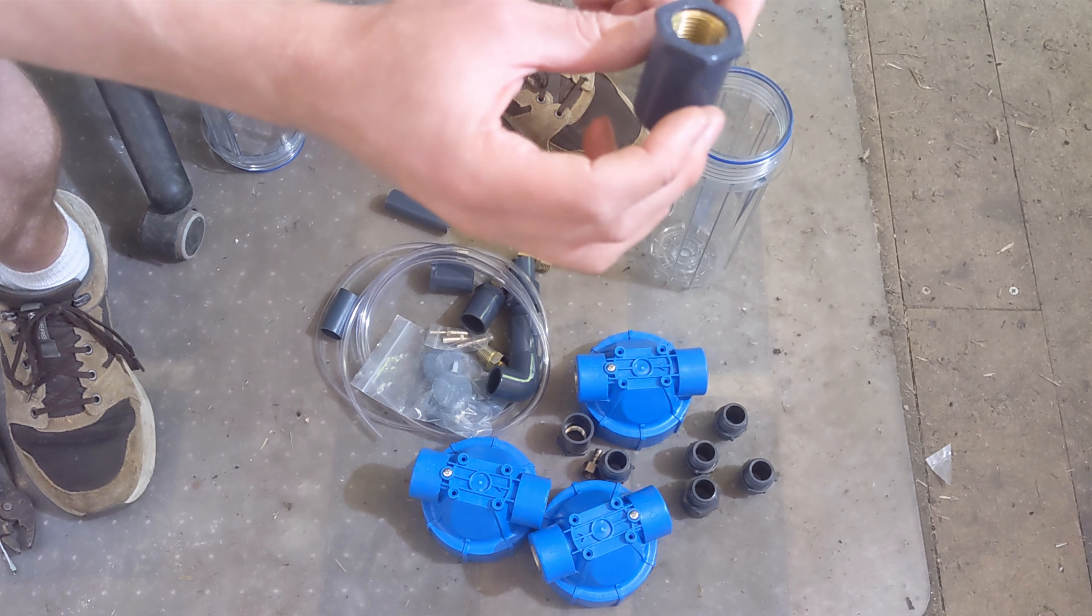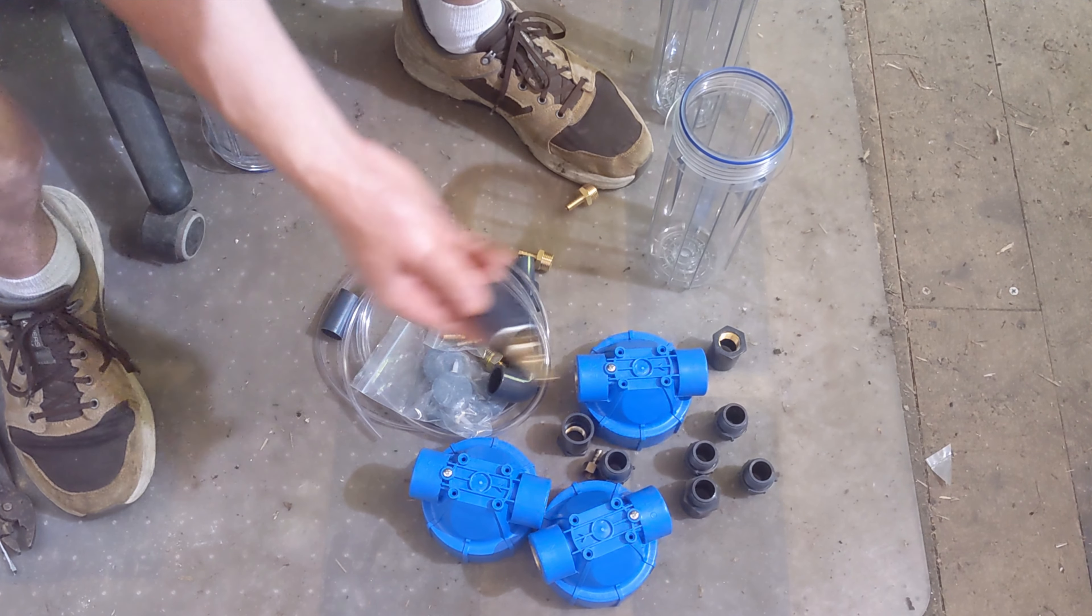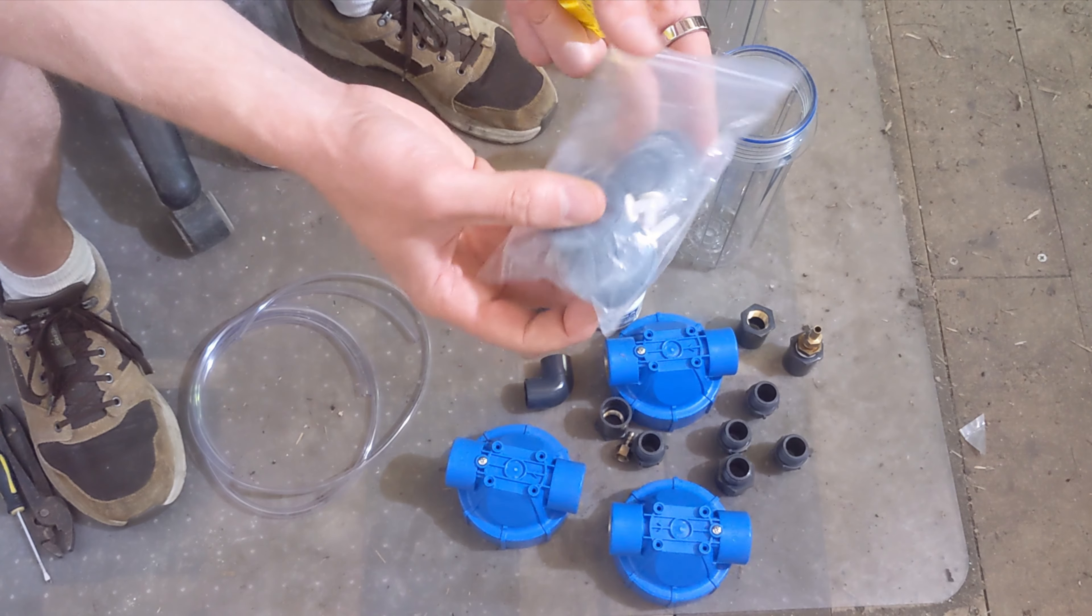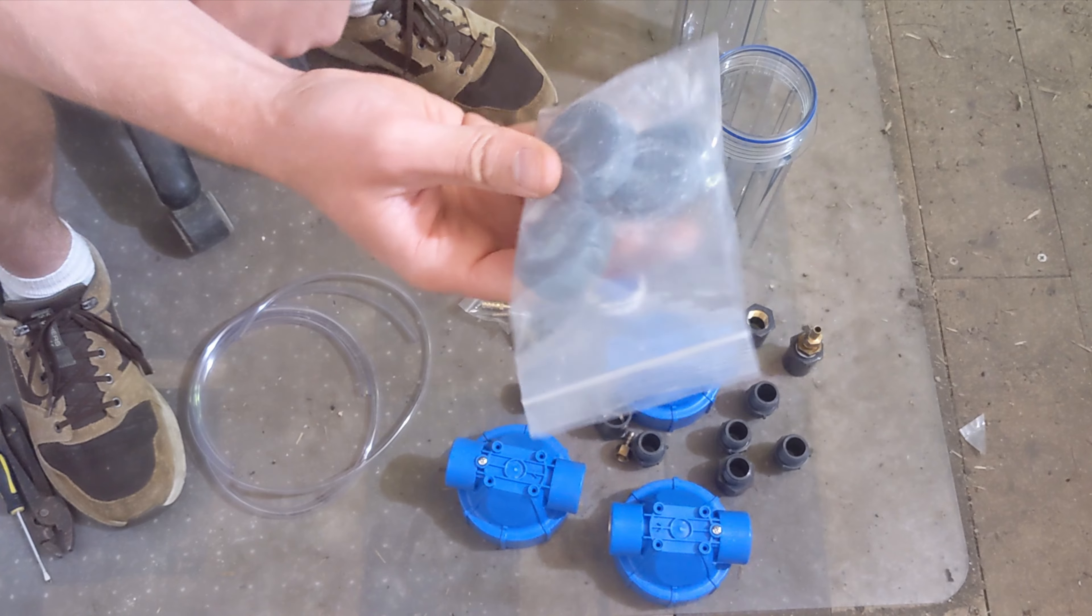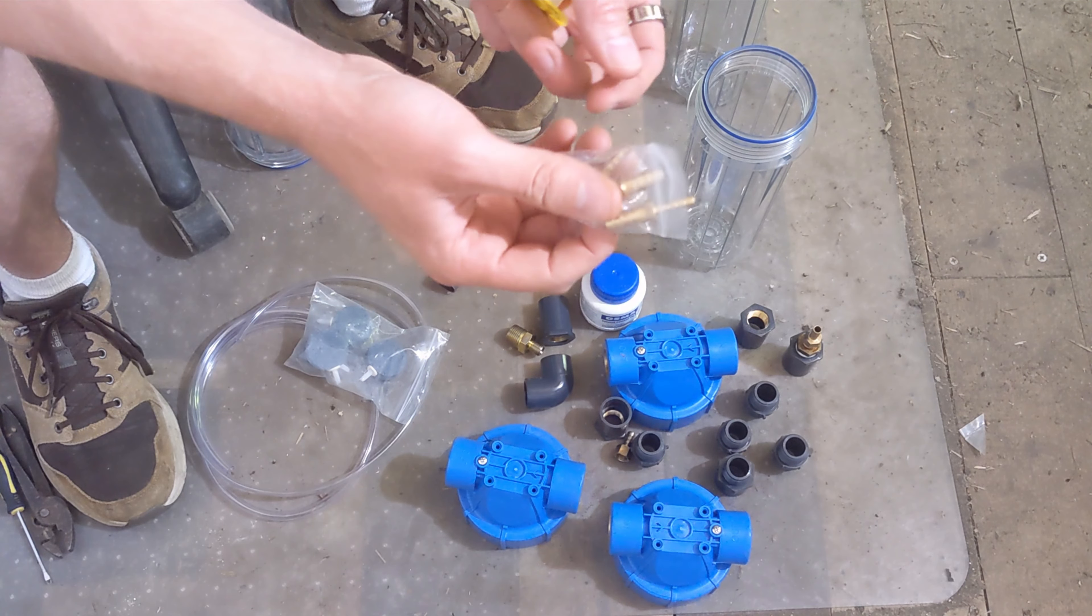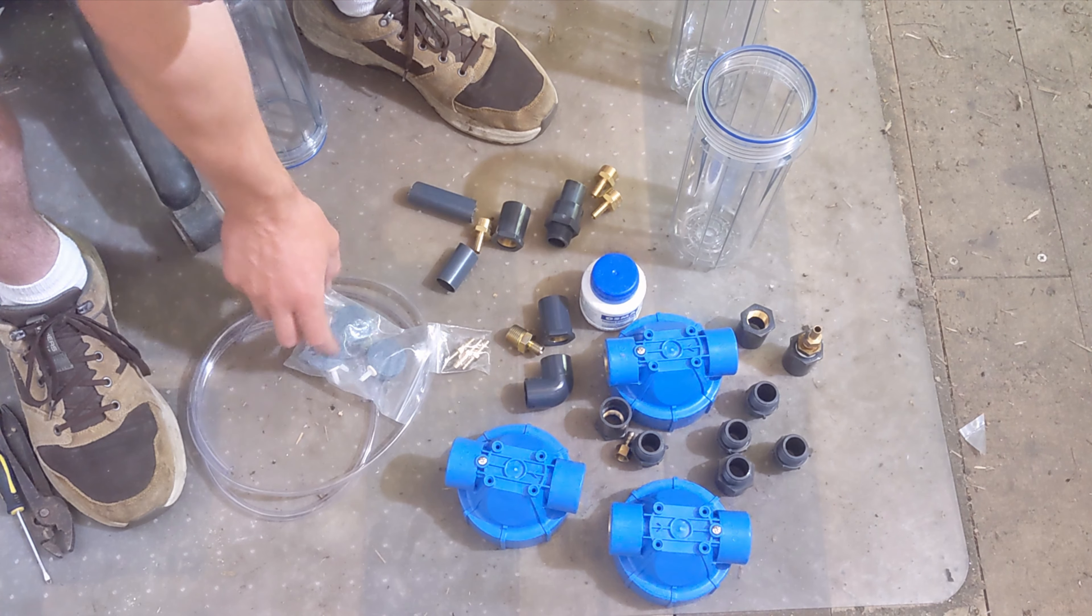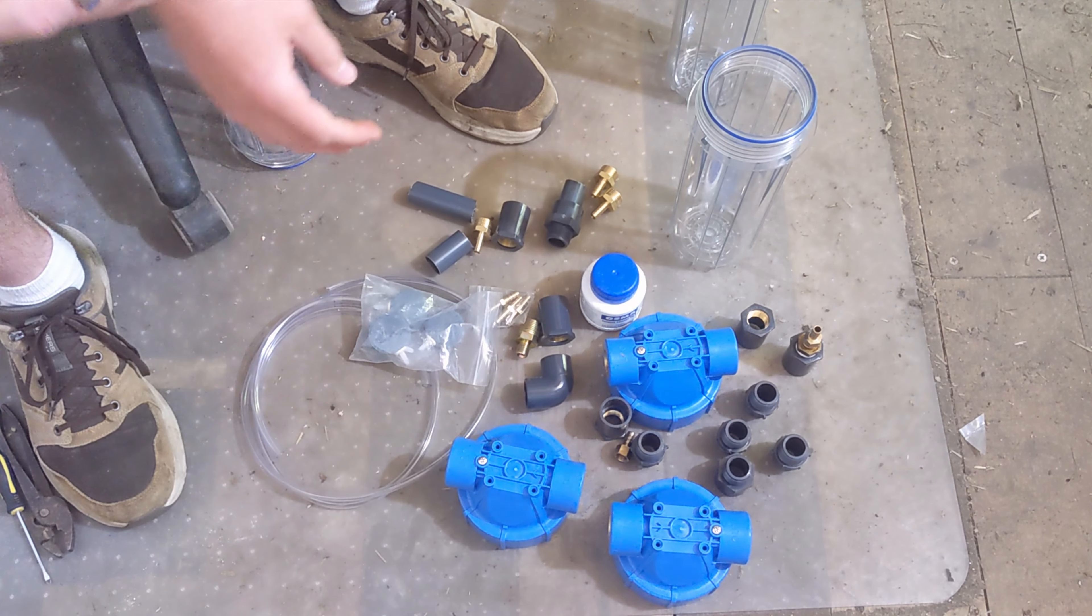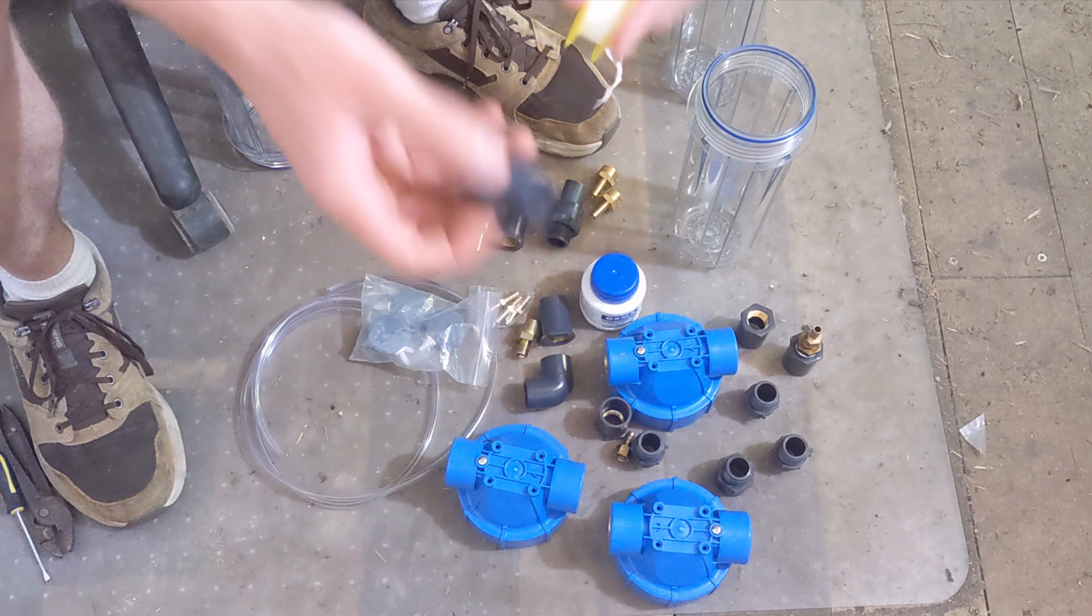We have these female BSP brass adapters I've taken off the old scrubbers, then we have some bubble rocks which are from fish tanks. This is to essentially turn the gas into tiny little bubbles for when it's going through each of the scrubbers. Then we have some hose adapters from 8mm to 4mm so that we can fit the rocks to the hoses. We have both 8mm hose and 4mm hose. Let's attach these all together and then we'll go from there.